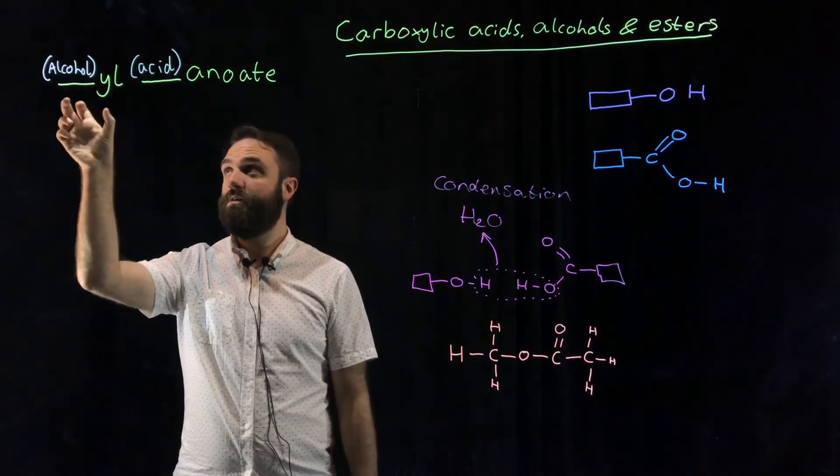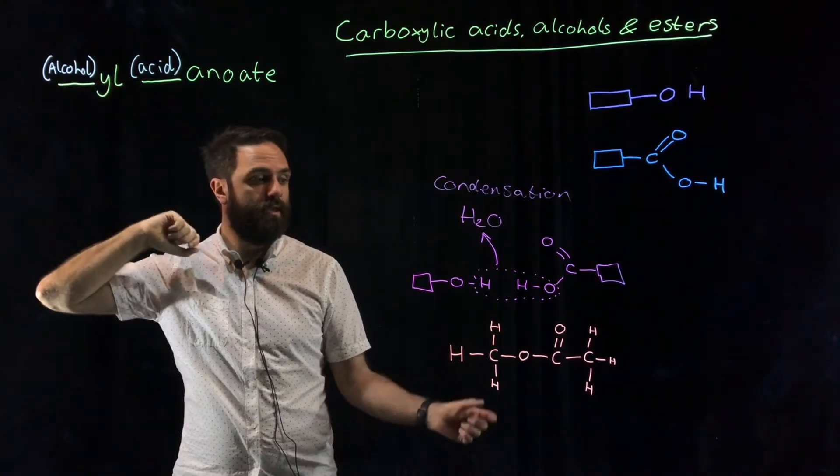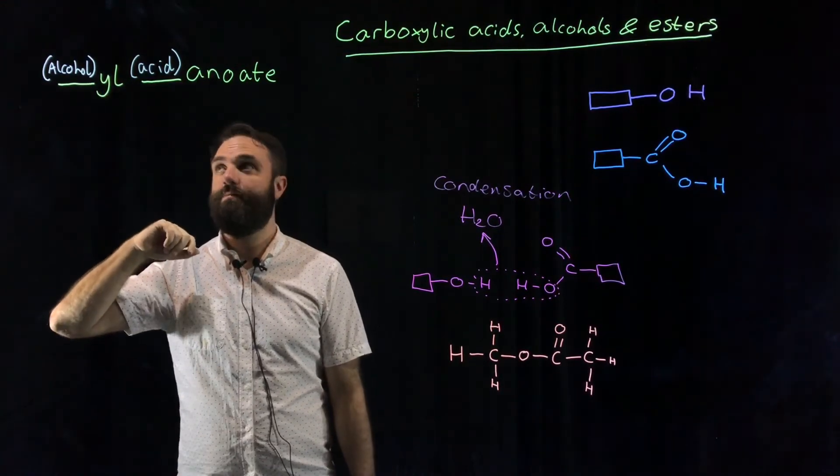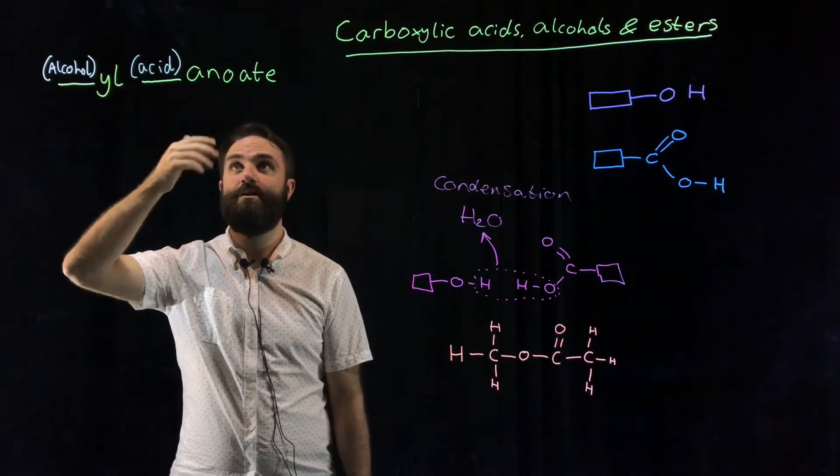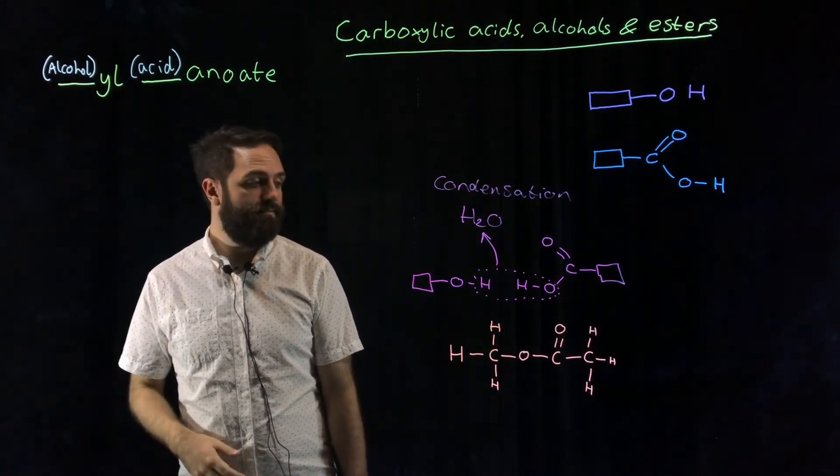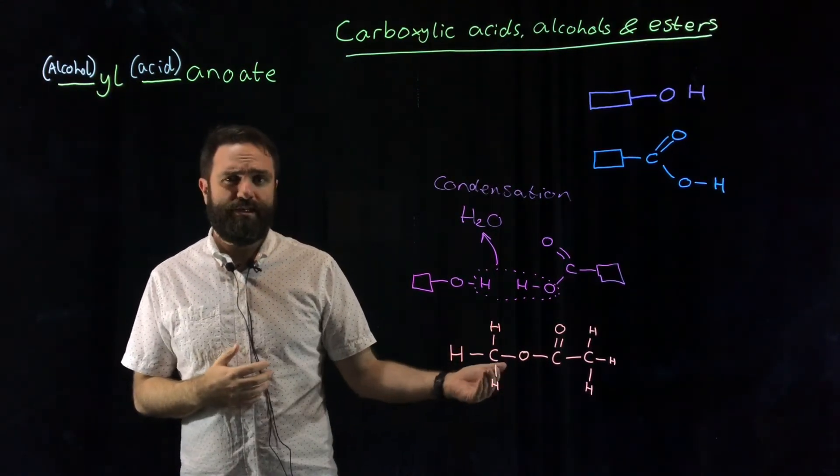The first part is the name of the alcohol and you add the suffix '-yl'. The second part is the name of the acid that you used and you add the suffix '-anoate'.